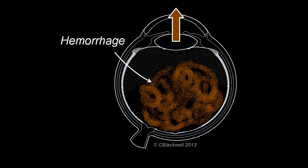Not only does it block vision, but it obscures the ability of the retina specialist to see in to treat the underlying problem. Clearing a vitreous hemorrhage was one of the original reasons for developing vitrectomy surgery.